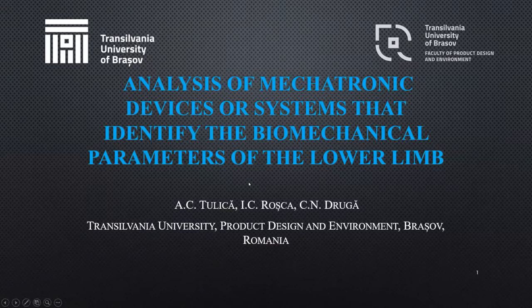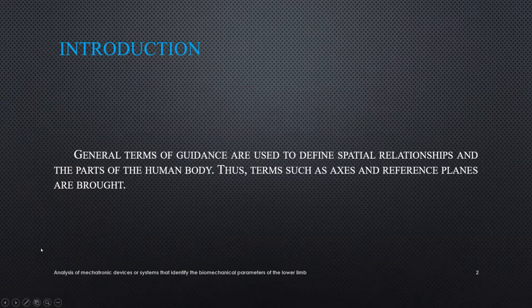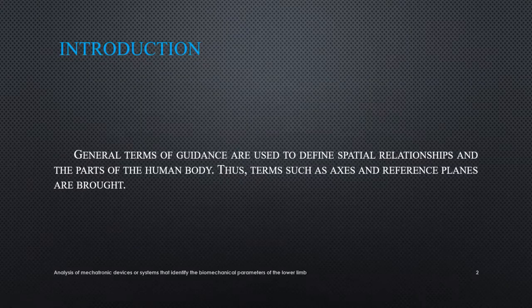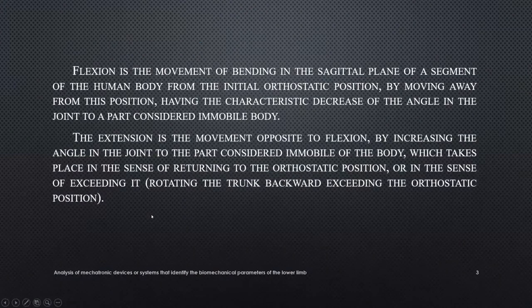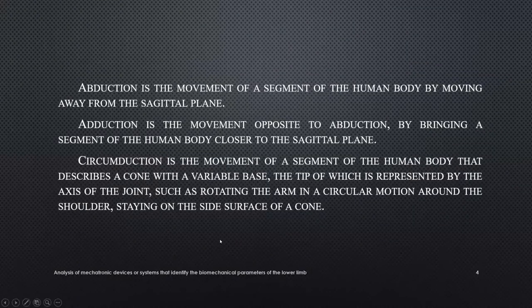Generally, when we speak about human locomotion, we first speak about coordinates, planes, and axes that are well known by everybody. We also speak about different types of movements specific to biomechanics: flexion, extension, rotation, abduction, adduction, circumduction — every sort of rotation around axes specific to biomechanics.